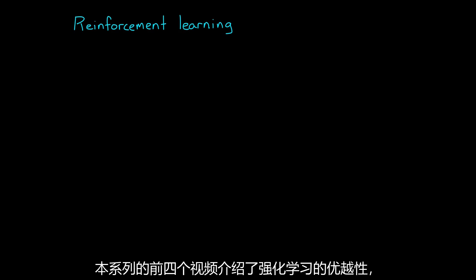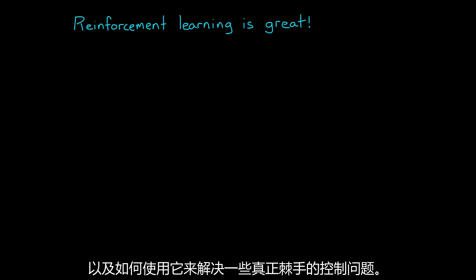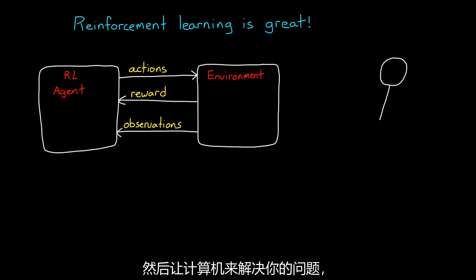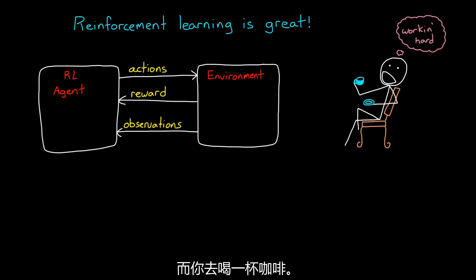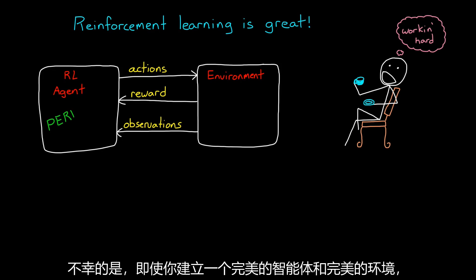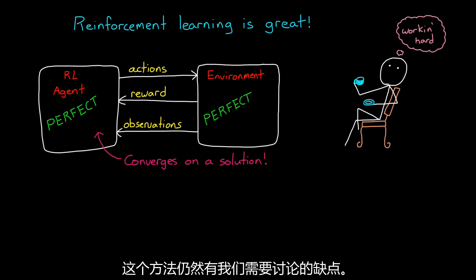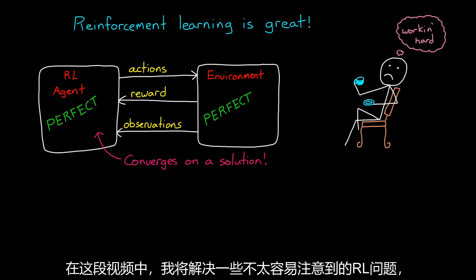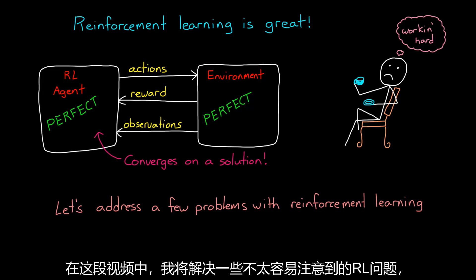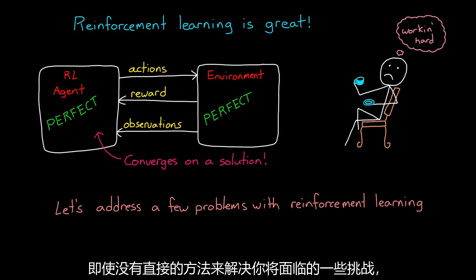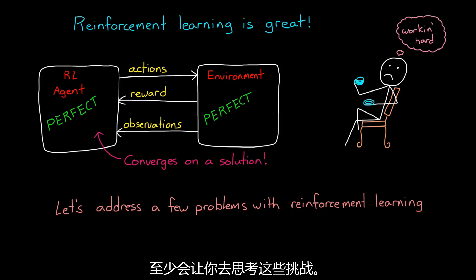The first four videos in this series covered how great reinforcement learning is and how you can use it to solve some really hard control problems. So you may have this idea that you can essentially set up an environment, place an RL agent in it, and then let the computer solve your problem for you while you go off and drink a coffee or something. Unfortunately, even if you set up a perfect agent and a perfect environment and the learning algorithm converges on a solution, there are still drawbacks to this method that we need to talk about. So in this video, I'm going to address a few possibly non-obvious problems with RL and try to provide some ways to mitigate them. Even if there aren't straightforward ways to address some of the challenges, at the very least it'll get you thinking about them.